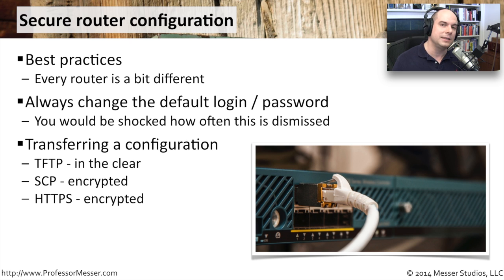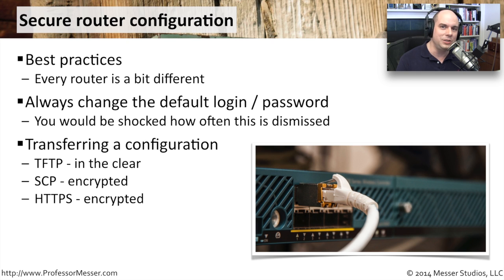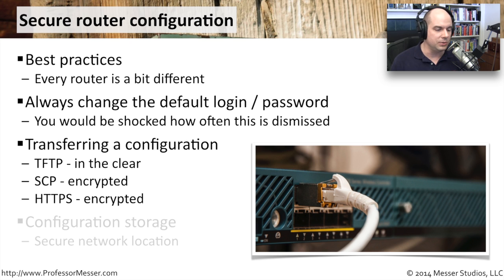TFTP, probably not so much — that is clear traffic. If somebody wanted to see the configuration files you're transferring via TFTP, all of your very sensitive security information would be in there. All of the information you added for IP address ranges and the different resources available. If someone gets their hands on a firewall, router log, or router configuration, there's a lot of useful information in there that bad actors could use.